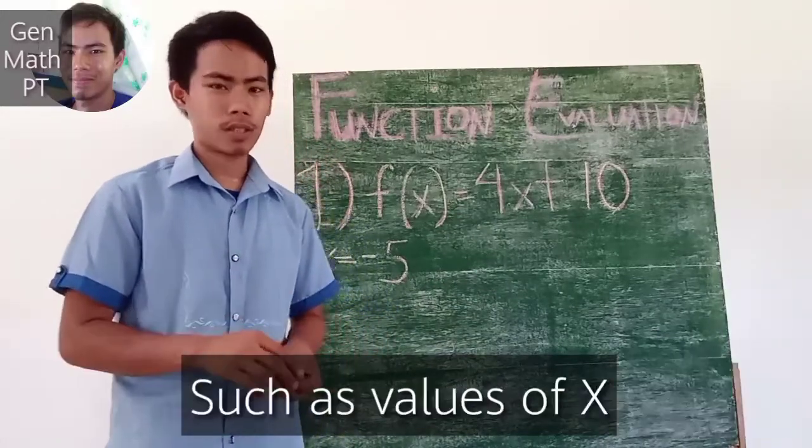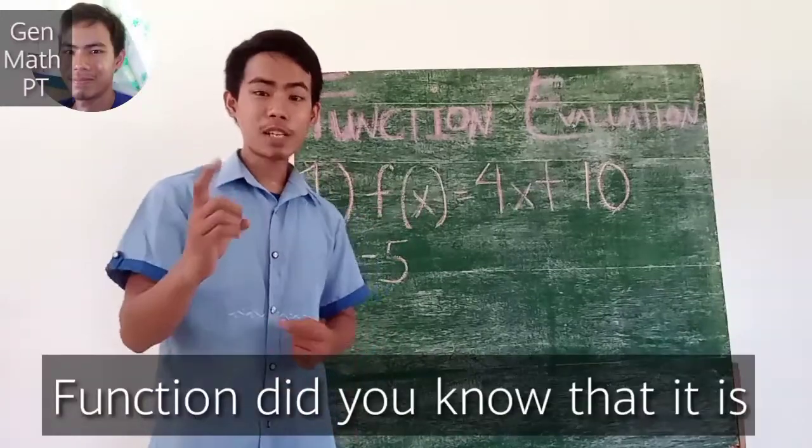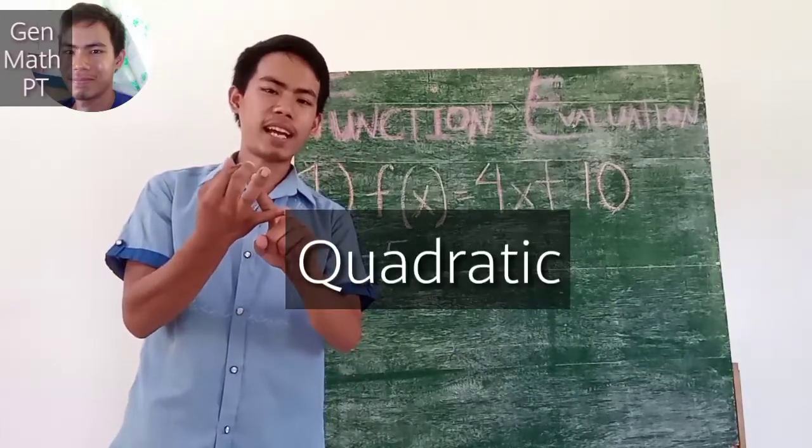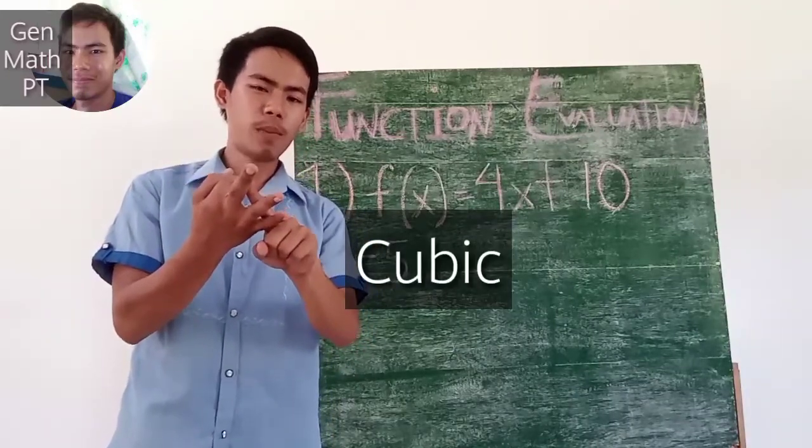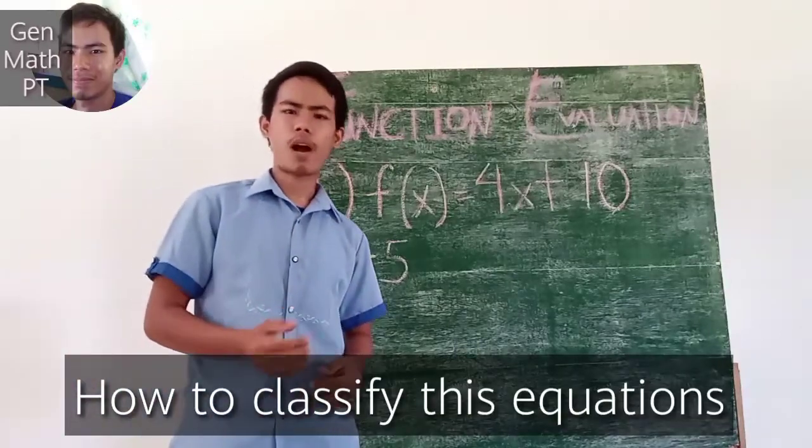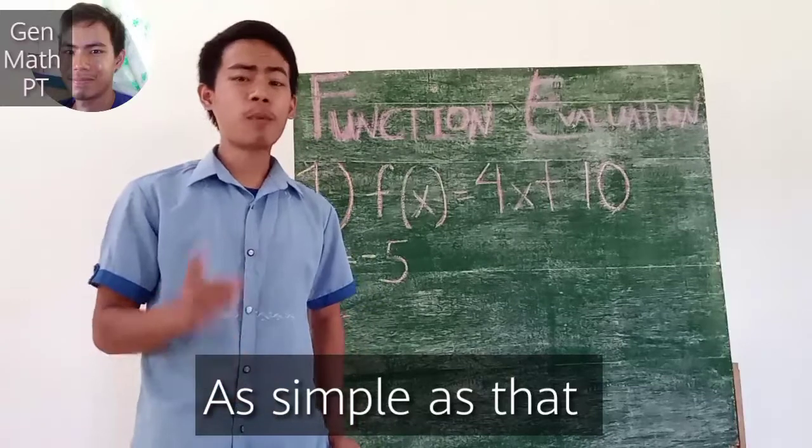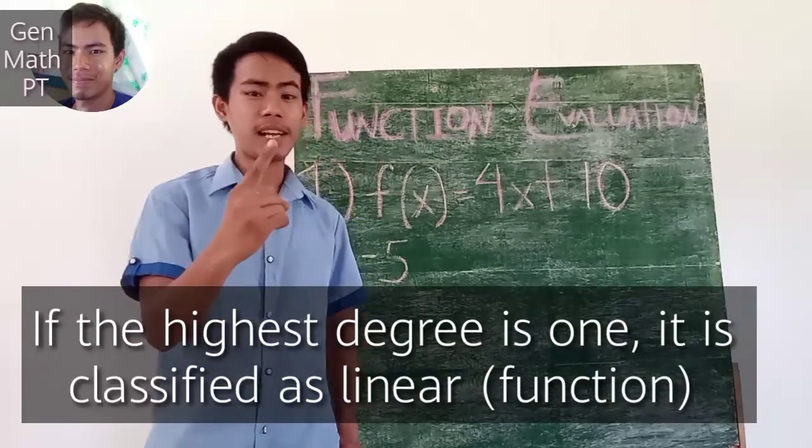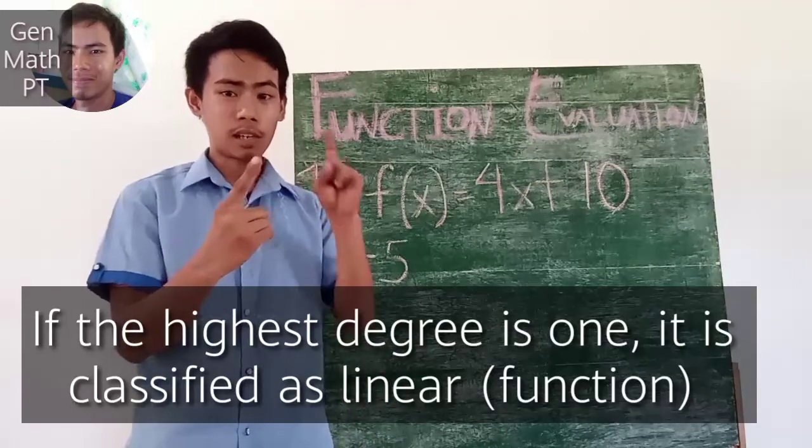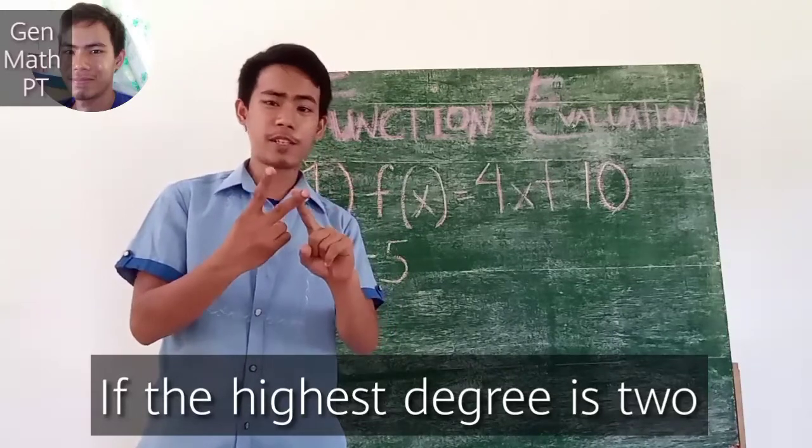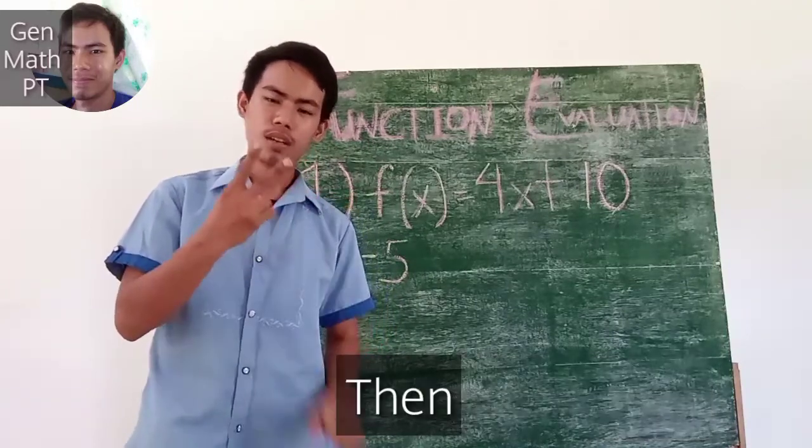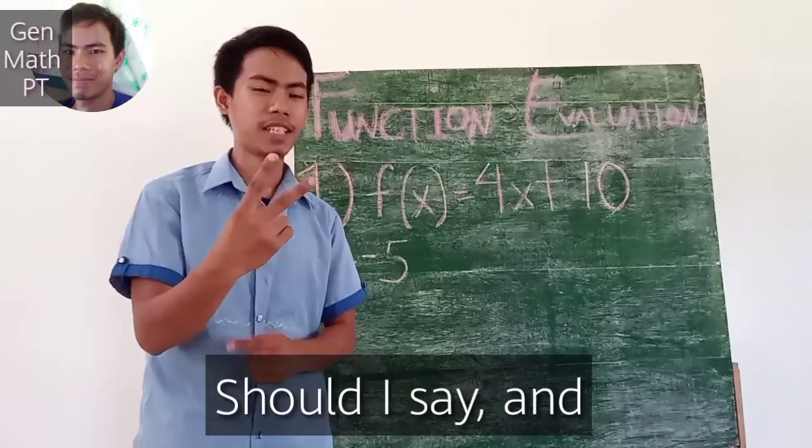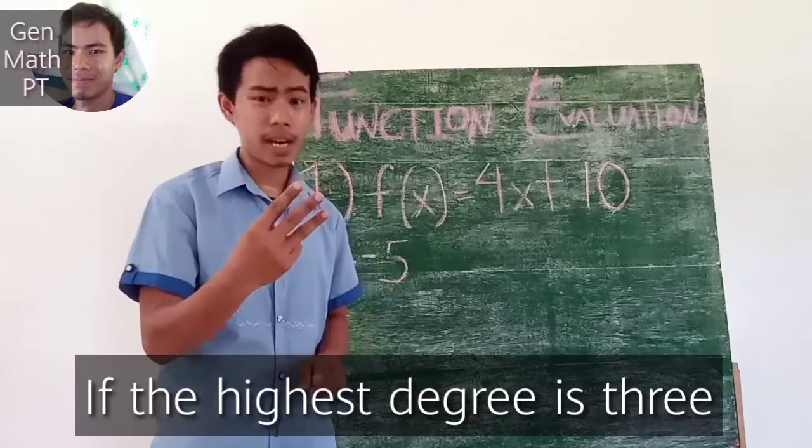Did you know that functions are classified into three: linear, quadratic, and cubic. How to determine or classify this equation? As simple as that - if the exponent is one, or the highest degree is one, it is called linear. If the highest degree is two, then it is called quadratic function. And if the highest degree is three, then it is called cubic.